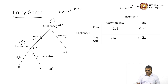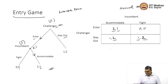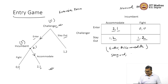Similarly, we have written the payoffs and can obtain the Nash equilibria. Nash equilibrium: if the incumbent decides to accommodate, the best response is enter. If the incumbent decides to fight, the best response is to stay out. If the challenger decides to stay out, the best strategy for the incumbent is to accommodate or fight. We get two Nash equilibria: enter-accommodate and stay out-fight.